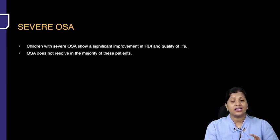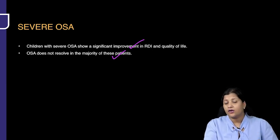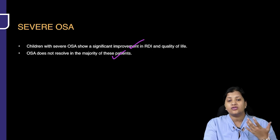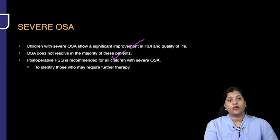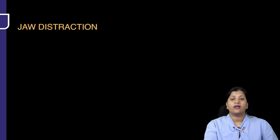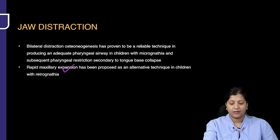Children with severe OSA have shown significant improvement in their RDI, but OSA does not resolve completely. If there is severe OSA and you do an adenotonsillectomy, it will not resolve completely in all patients. You will need to do a post-operative PSG in all children with severe OSA to determine if they require any further additional therapy.